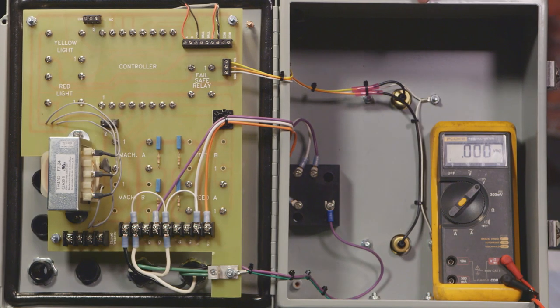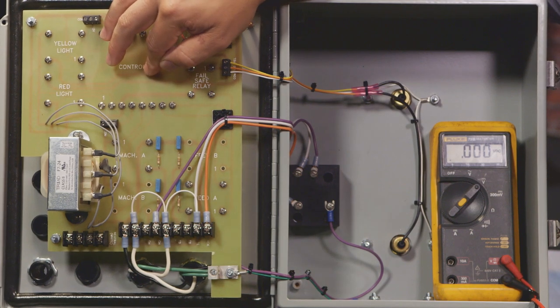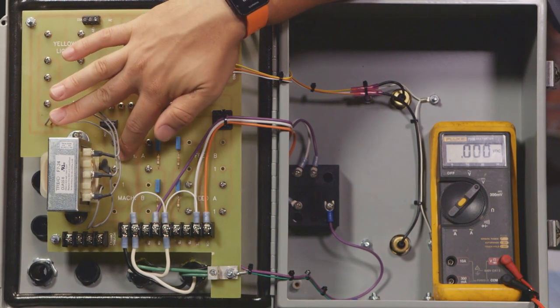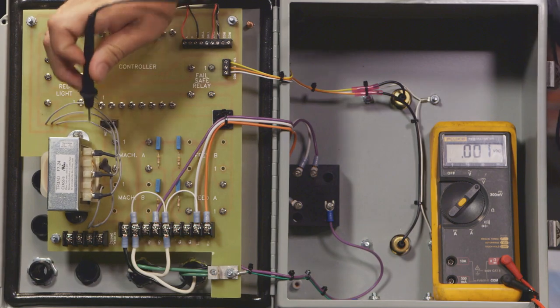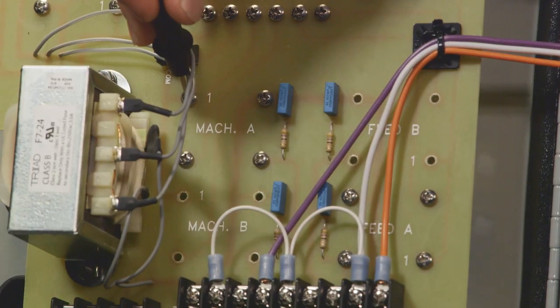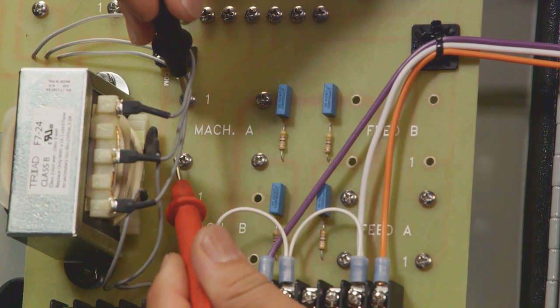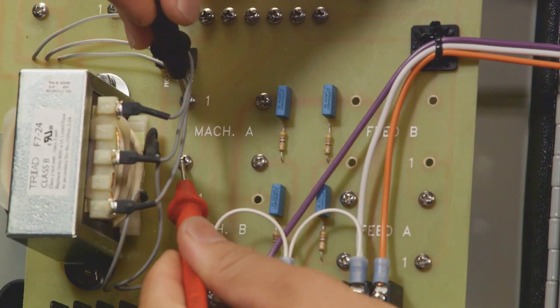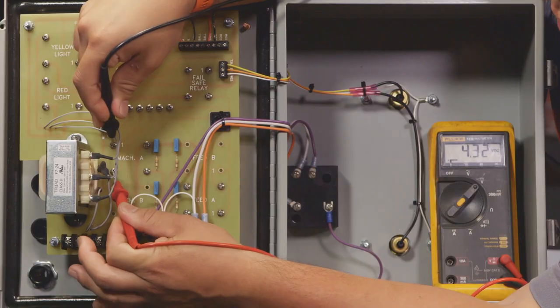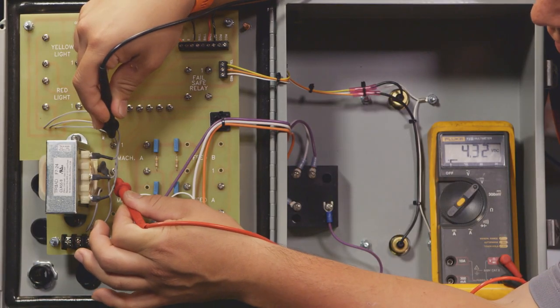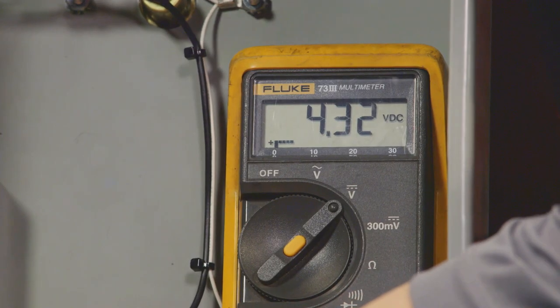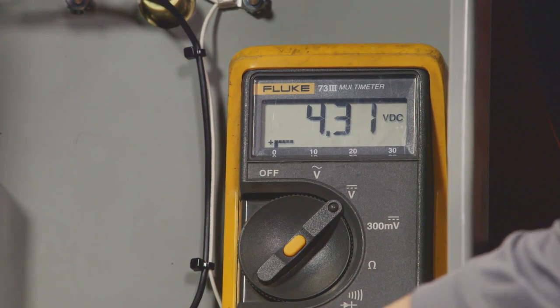After the yellow light has been turned on, the controller is going to send a signal down to turn on the machine relay. The machine relay is located down here. And again, like all other relays, we have a number 1 that denotes the ground position. And the controller is going to send a 5 volt signal down to this lower left-hand screw. So we're going to check that with our other test lead. And we can see we're getting 4.3 volts. That's enough to turn on the relay.